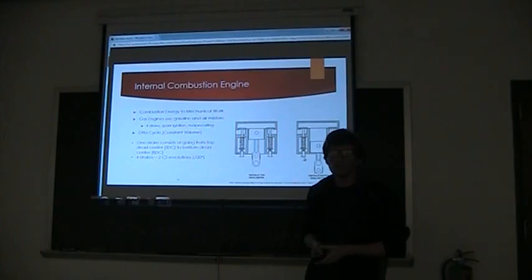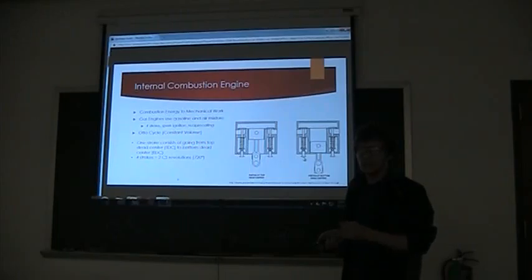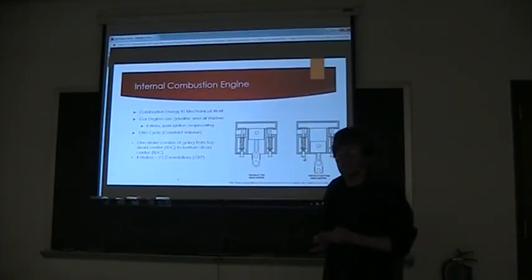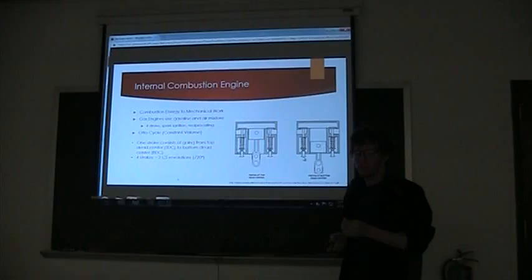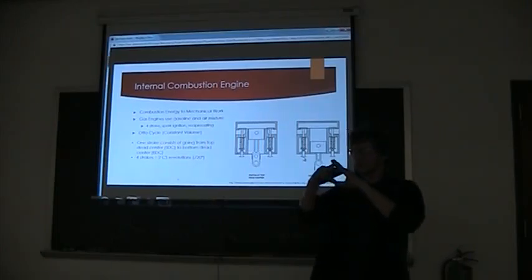The internal combustion engine that we're going to be observing is actually a reciprocating four-stroke spark plug ignition engine. If you look at this diagram right here, you can see what two of those categories mean. It's reciprocating in that it moves in this up and down motion. It is spark plug ignition because there's going to be a spark plug here at the top. And then the last one is four-stroke, which means that it goes through four strokes to complete a cycle.